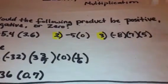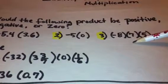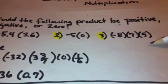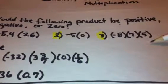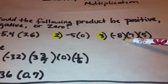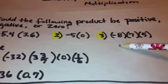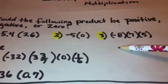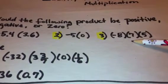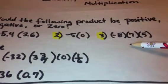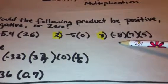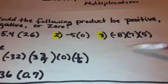Number three is negative 8 times 7 times 5. And our product here is going to be a negative number because we have one negative number. If we had two, then, for example, if seven were also negative, then our product would be positive. But since we have an odd number of negative numbers in this multiplication problem, our answer is going to be negative.